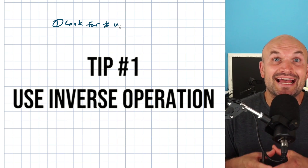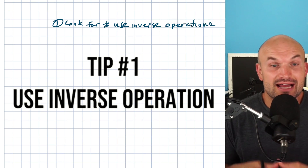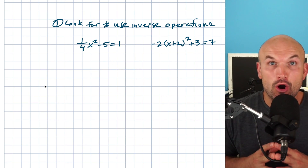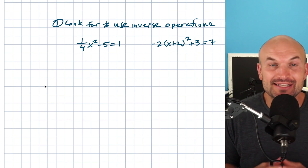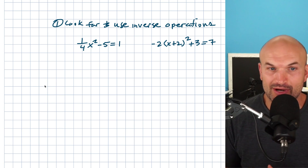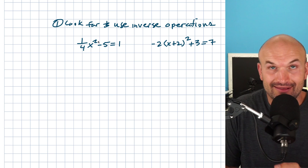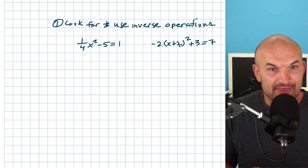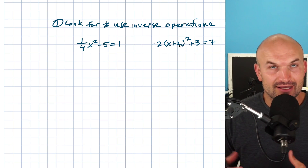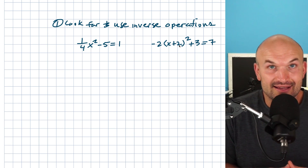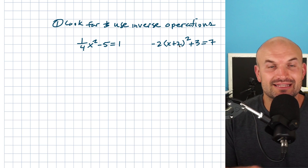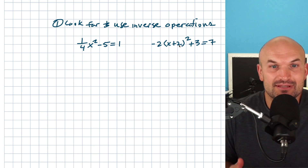Tip number one is look for and use your inverse operations. I want you to see in these two equations that I have one variable x, and this is the only time that you are going to be using your inverse operations for a quadratic equation. So when you only have one x, you can use your inverse operations. Any other time, please do not make that mistake because you will get the problem wrong.